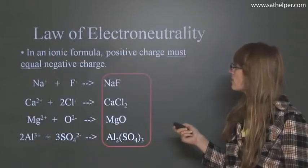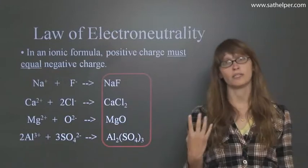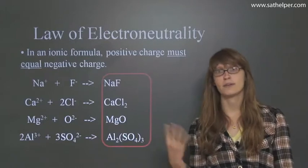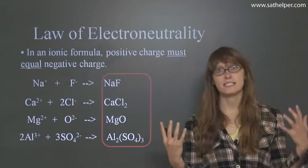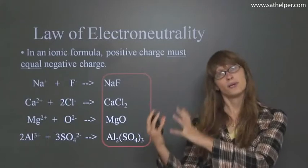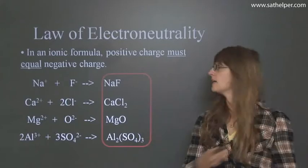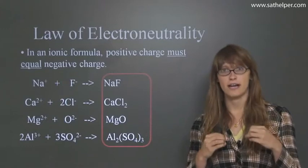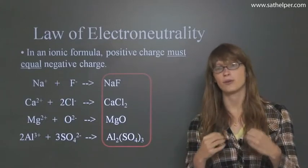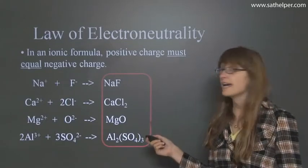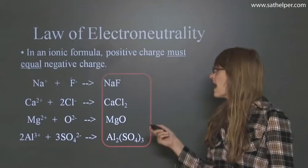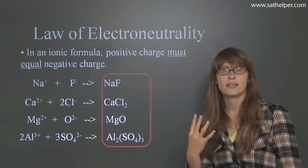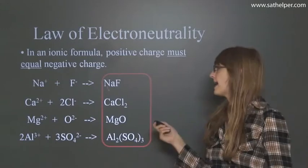So in an ionic formula, positive charge must equal negative charge. So this makes sense. In math and science and pretty much every other scientific discipline, you have an equal sign. You want the thing on one side to equal the thing on the other side. So it's the same thing with charge. Charge has to balance itself out. It has to be neutral for it to be stable. So here we have Na with a positive charge of 1 and an F with a negative charge of 1. So the positive 1 and the negative 1 neutralize each other and you get NaF.